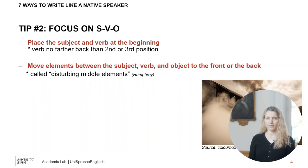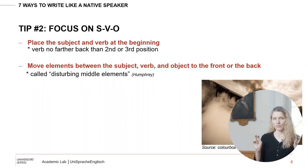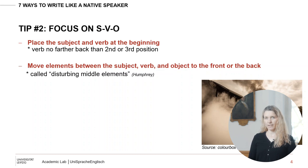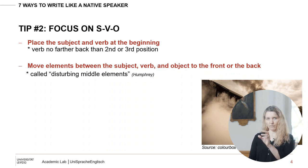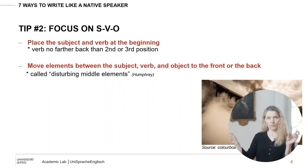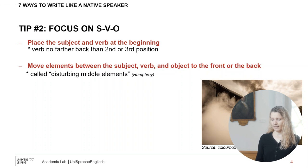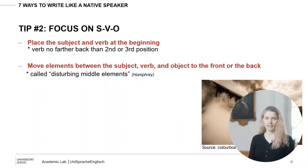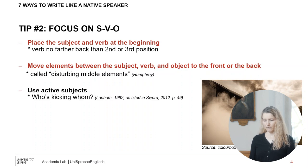These are what we call disturbing middle elements. When you're going through your writing, you can analyze it — if there's anything between the subject and verb, or between the verb and the object, you should move it: either move it to the front or move it to the back. Then you'll be able to retain the subject-verb-object construction, and it will sound more natural.